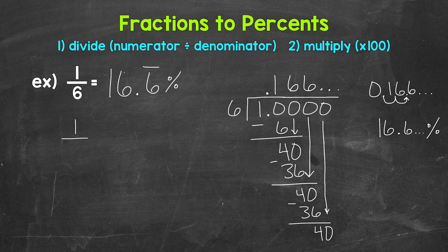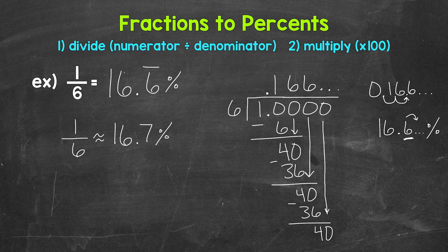So 1/6 is approximately. And I'm using the approximately symbol here since we are rounding. This isn't exact. Well, we have a 6 in the tenths place. And we know this six is repeating. So we have a 6 to the right in the hundredths. So this rounds up to 16.7 percent.